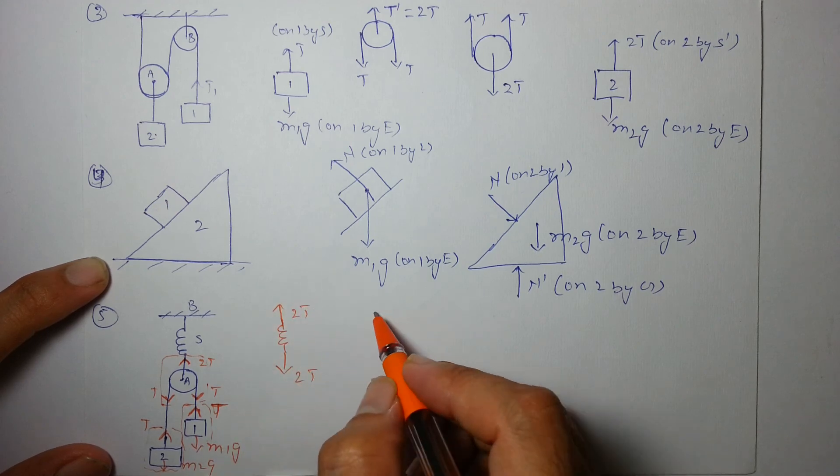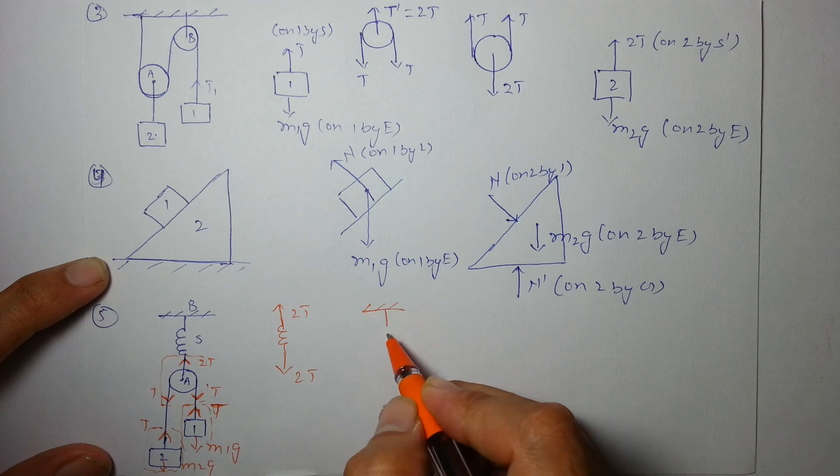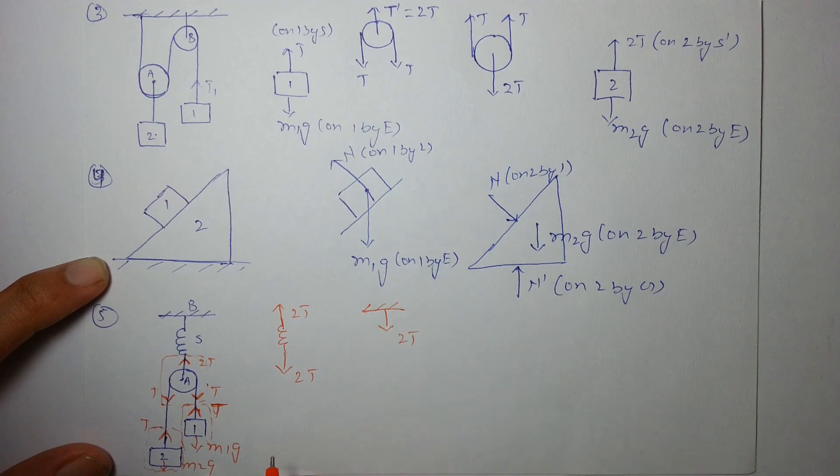So the upward force will be 2t. On spring we have a 2t in downward direction and 2t in upward direction as well. On support it will be 2t in downward direction, 2t is nothing but kx which is the spring force. Enjoy!